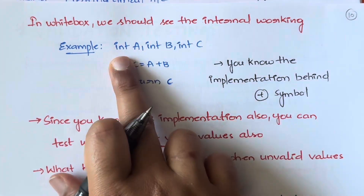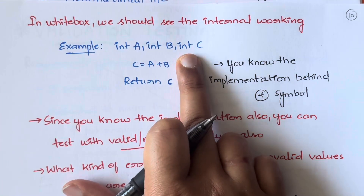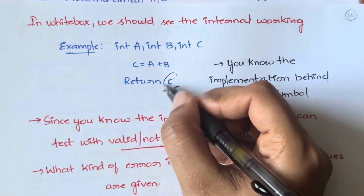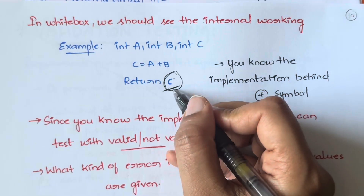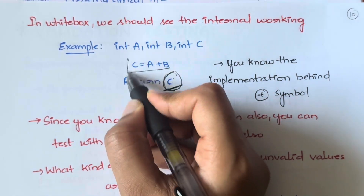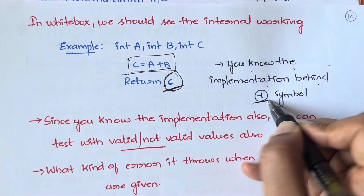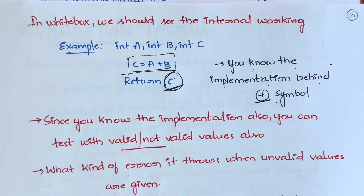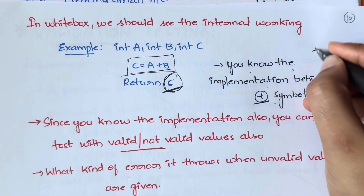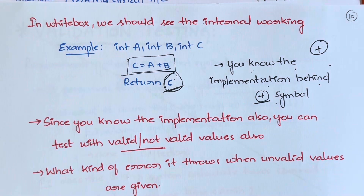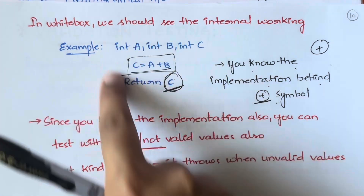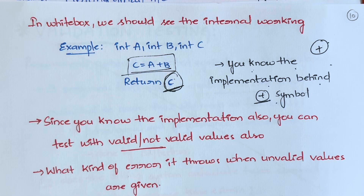In white box testing, you will be able to see the internal working. For example, let's say there is int a, int b, int c, and the code says return c. You will be able to see what operation is happening behind c — you will know the implementation behind the plus symbol, showing that you are adding both numbers.